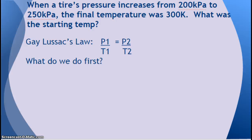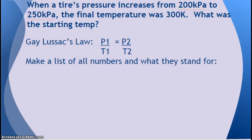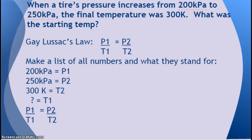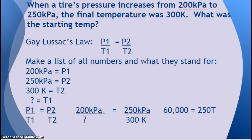Let's do another one. When a tire's pressure increases from 200 kilopascals to 250 kilopascals, the final temperature was 300 Kelvin. What was the starting temperature? Make a list of all the numbers and what they stand for — hit pause and make sure you can do this yourself. We're solving for T1. Our starting pressure was less than our final pressure, so this answer should be less than 300. Plug in your numbers, solve for T, and the answer is 240 Kelvin, which is less than 300 — so that makes sense.